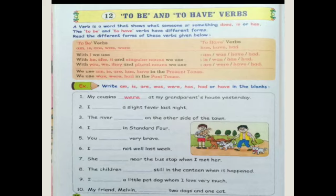Seventh sentence: She dash near the bus stop when I met her — the answer is 'she was near the bus stop when I met her'. Eighth sentence: The children dash still in the canteen when it happened — the answer is 'the children were still in the canteen when it happened'.